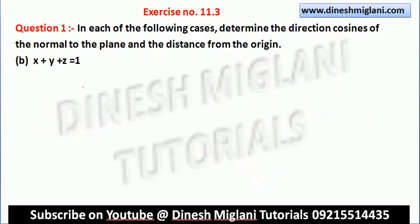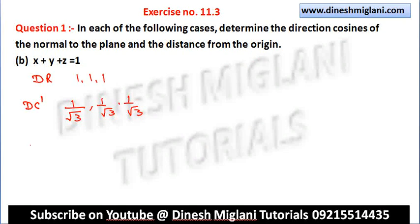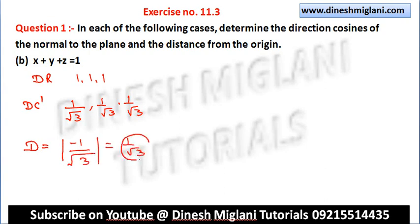Part 2: the plane is X + Y + Z = 1. The direction ratios are 1, 1, 1, so the direction cosines are 1/√3, 1/√3, and 1/√3. The distance from the origin is |−1|/√3 = 1/√3.